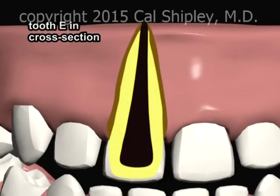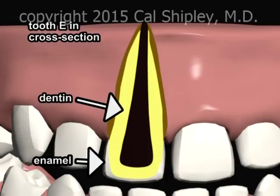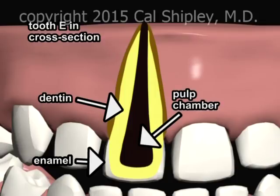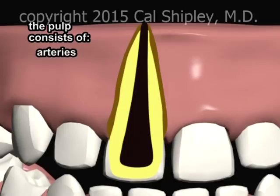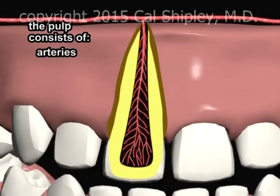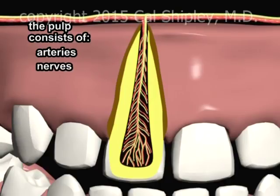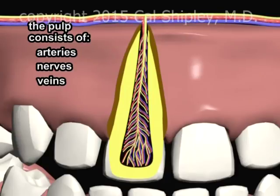Looking at a cross-sectional view of the incisor, the outer protective layer of the tooth is called the enamel. Deep to the enamel and providing the primary structural support for the tooth is the dentin. Located in the very center of the tooth is the pulp chamber. Within the pulp chamber lies the pulp, which consists of arteries, which supply nourishing blood to all the dental tissues, nerves, which provide sensation, and veins, which return blood back to the circulatory system.